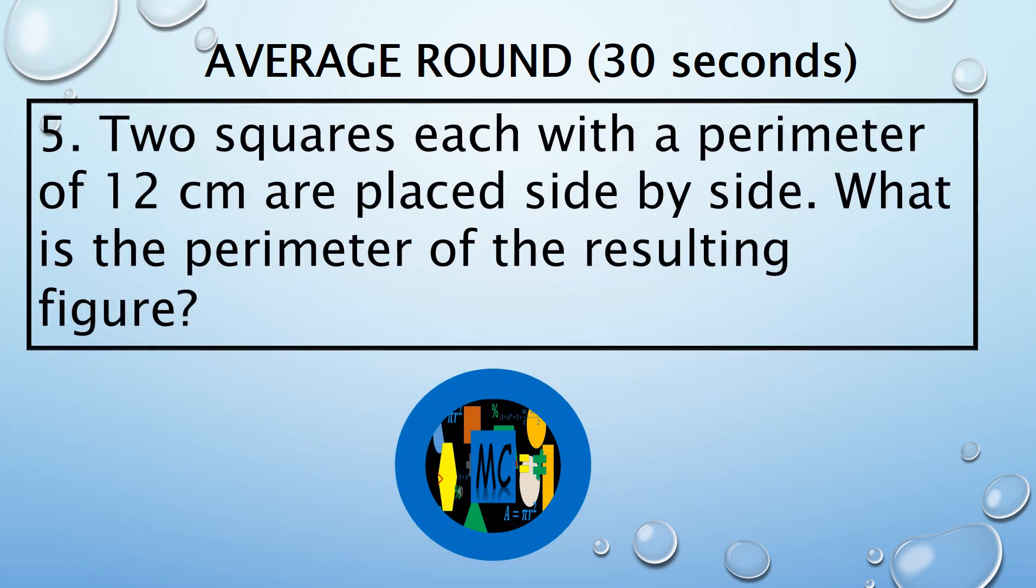5. Two squares each with a perimeter of 12 cm are placed side by side. What is the perimeter of the resulting figure?